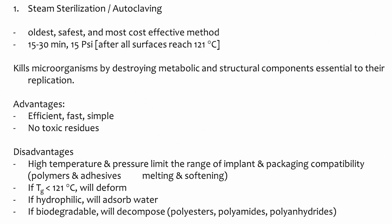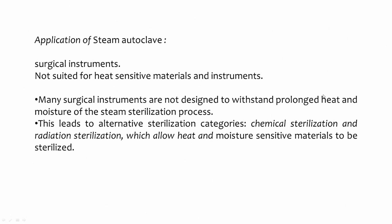The easiest method is steam sterilization — the oldest, safest, and cheapest. It is done at about 15 psi for 15 to 30 minutes, reaching around 120°C, killing microorganisms by destroying metabolic and structural components. Advantages: efficient, fast, simple, no toxic residues. Disadvantages: cannot be used for packaging materials, polymers, adhesives, or materials that melt or soften — if the glass transition temperature Tg is below 121°C, the material will deform. Hydrophilic or biodegradable materials like polyesters are also unsuitable. Prolonged heating from steam moisture may damage materials.